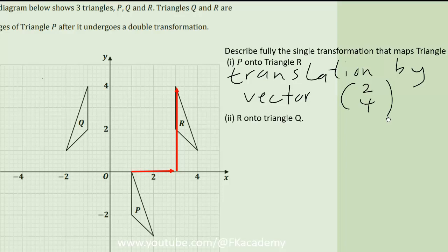Part II asks us to describe the transformation that maps triangle R onto triangle Q. Observing this carefully, when we draw a line at x equals 1, you can see that the distance from this line to triangle R is the same as the distance from this line to triangle Q. This is a reflection. Q is a reflection of R in the line x equals 1.